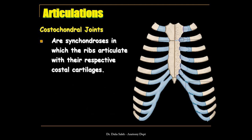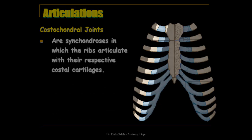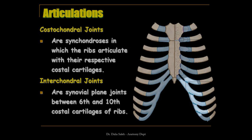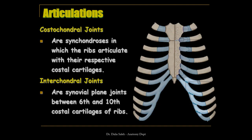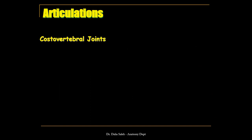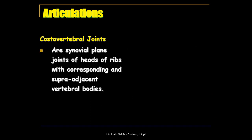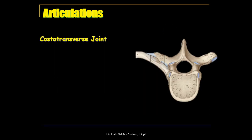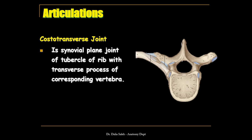We also have the costochondral joints, which are cartilaginous joints between the rib and its corresponding costal cartilage. We also have interchondral joints, which are plain synovial joints between the costal cartilages of adjacent ribs. The costovertebral joints are plain synovial joints between the heads of the ribs and the corresponding vertebrae and the vertebra above. Costotransverse joints are also plain synovial joints between the tubercle of the rib and the transverse process of the corresponding vertebra. All of these joints are supported and reinforced by ligaments.